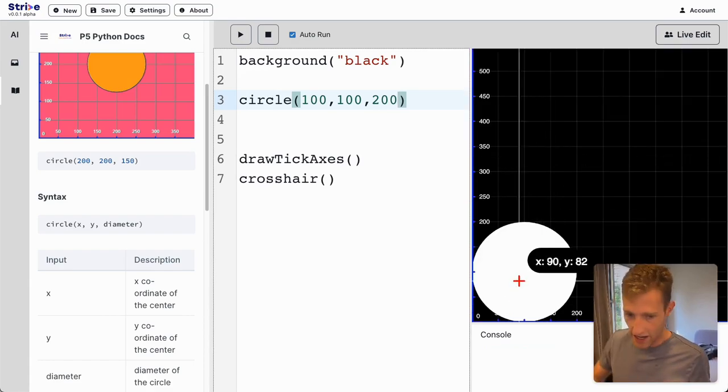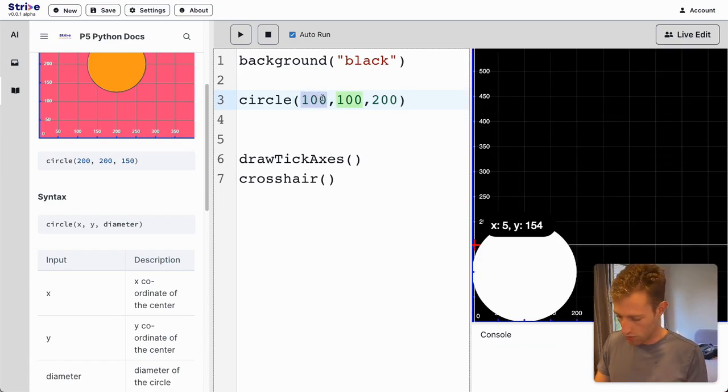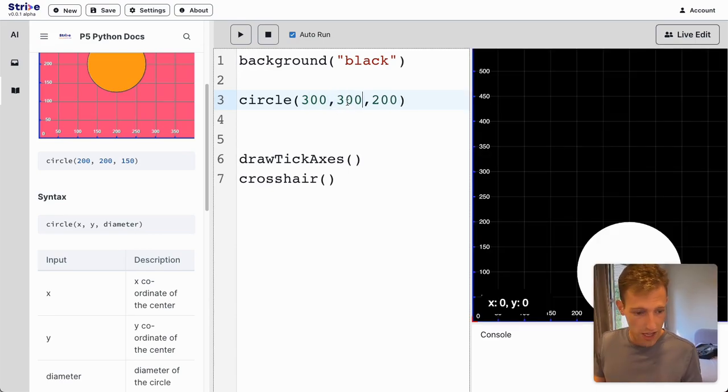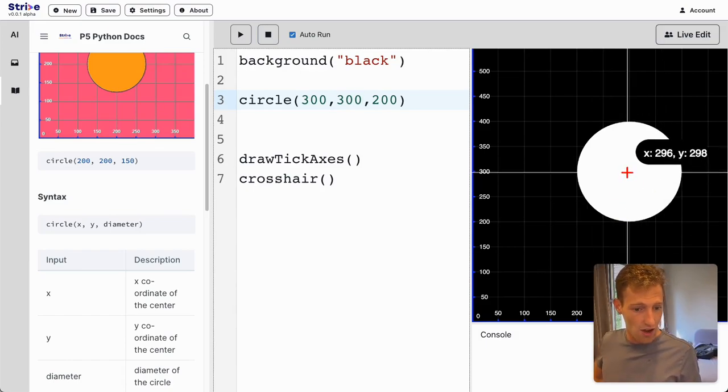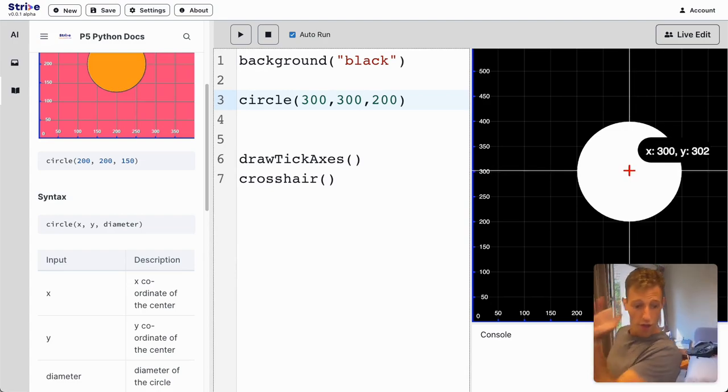Let me adjust this to make it nicer. I'll put you at 300 so you're not right here, and make you a bit bigger. What's happening here is the center of my circle is at x coordinate 300, which is 300 to the right, and at y coordinate 300, which is 300 up.